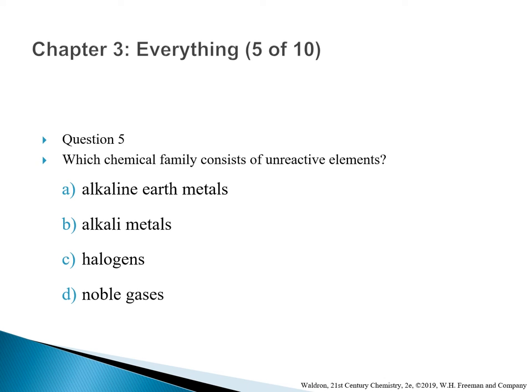Question 5: Which chemical family consists of unreactive elements? A. Alkaline earth metals. B. Alkaline metals. C. Halogens. D. Noble gases. The correct answer is D — noble gases. They are called noble gases because they are inert from reaction. They are group 18 elements located on the far right of the periodic table.